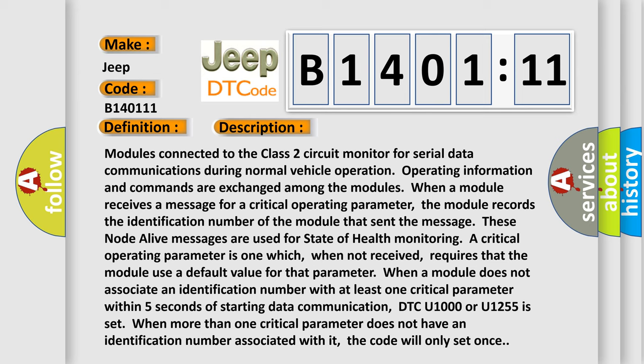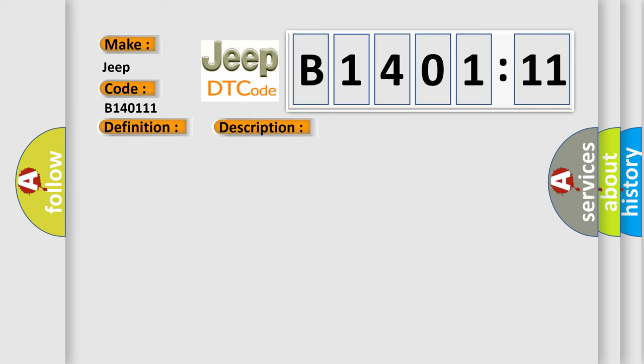These node alive messages are used for state of health monitoring. A critical operating parameter is one which, when not received, requires that the module use a default value for that parameter. When a module does not associate an identification number with at least one critical parameter within five seconds of starting data communication, DTC U1000 or U1255 is set. When more than one critical parameter does not have an identification number associated with it, the code will only set once.